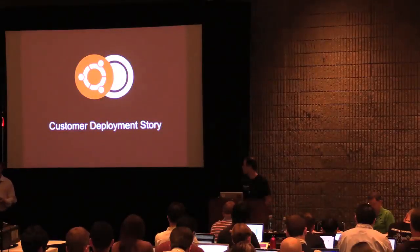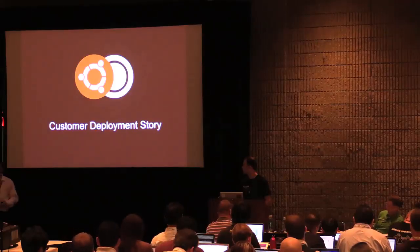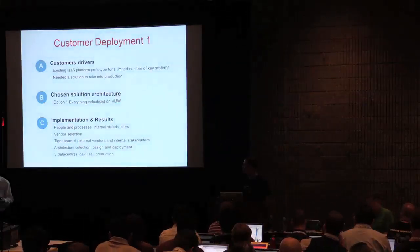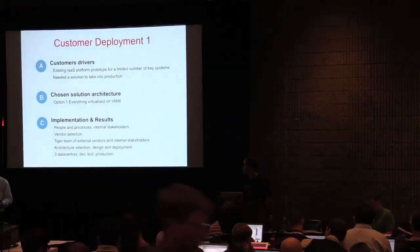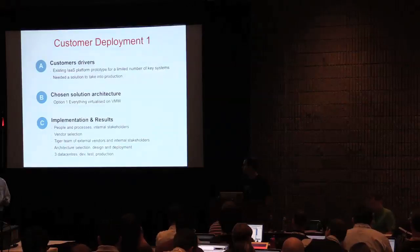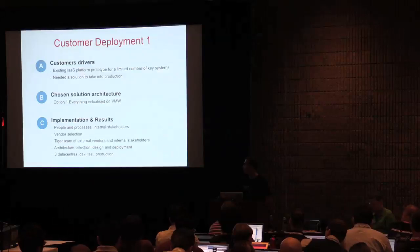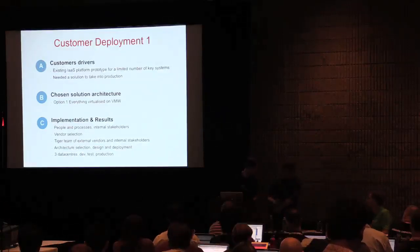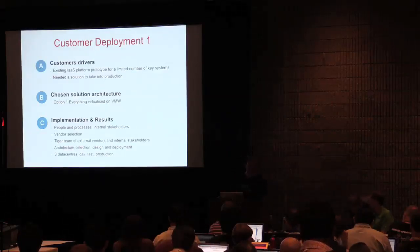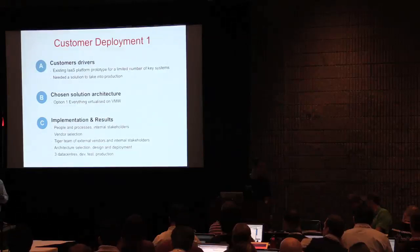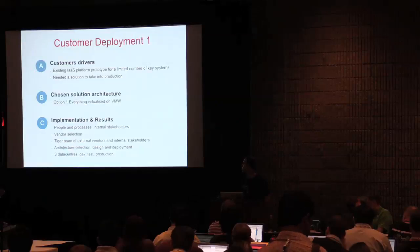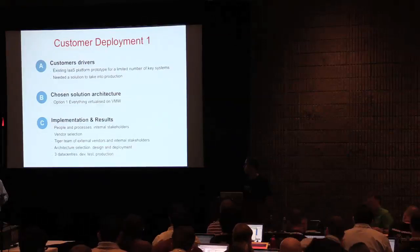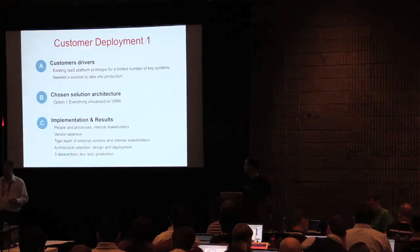I want to quickly walk through a single customer deployment story that we did jointly with our friends at VMware. This was a customer who had an existing infrastructure-as-a-service platform, had prototyped it with their organization, could see immense demand for it, but really needed something more robust — so OpenStack was the obvious answer. They chose option A — everything virtualized on VMware, including the core OpenStack services. We provided consultancy and services, VMware provided expertise, they had really good internal stakeholders, and together we made this project a success.